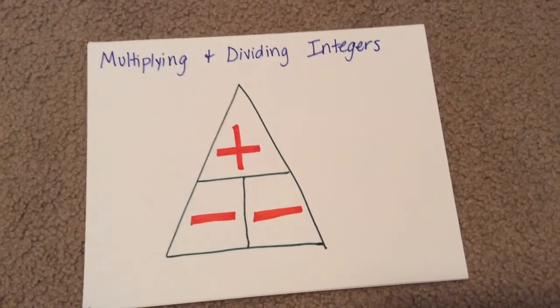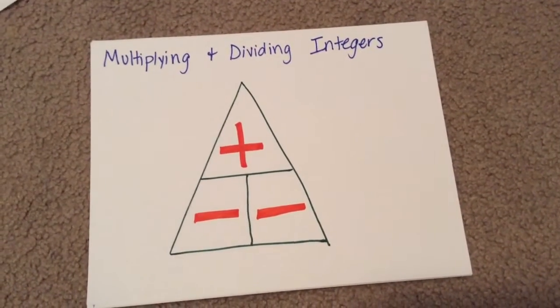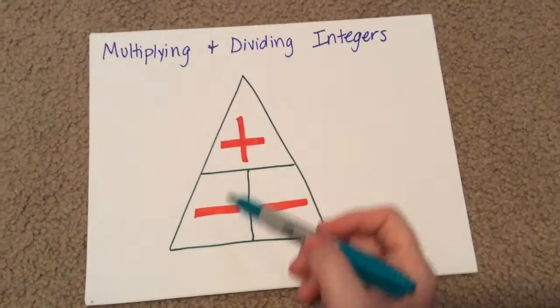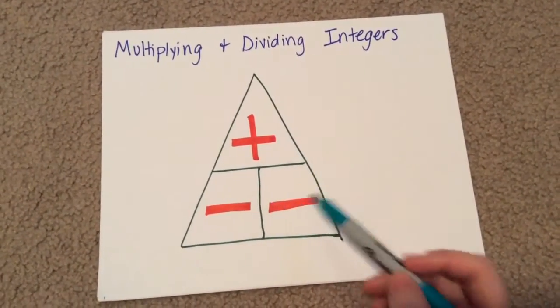Okay, our last one for this activity here: multiplying and dividing integers. Remember, we learned this triangle here and how to use positive and negative numbers.